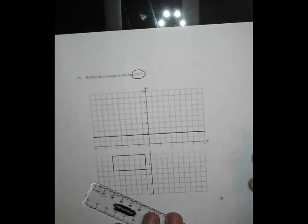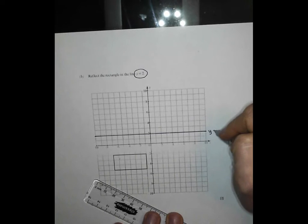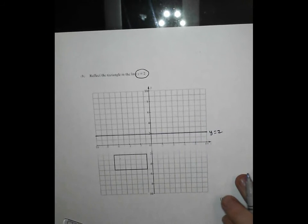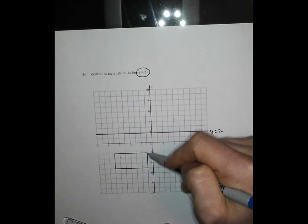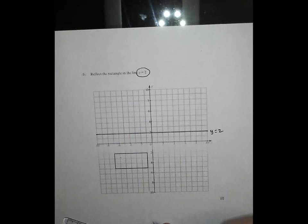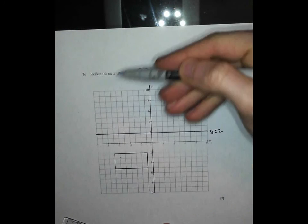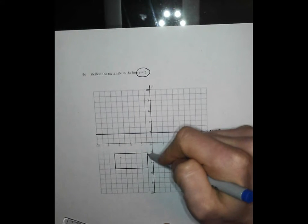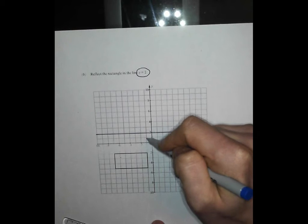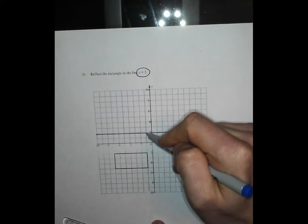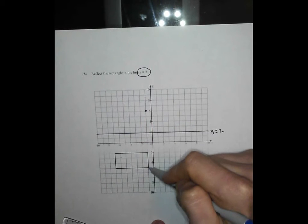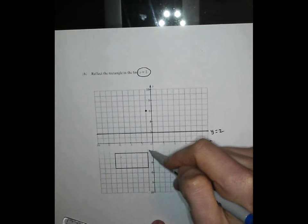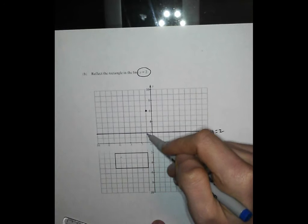And then the rest of it's pretty straightforward. To reflect in there, I tend to count how far each point is away from the line and then make sure it's the same distance from the line on the other side. So if we take this point, we go one, two, three, four away from the line. So let's keep going another four. One, two, three, four. Make a little dot there. This point here, one, two, three, four, five, six, seven away. So let's make sure we get seven away this side. One, two, three, four, five, six, seven. And you'll start to see a picture of the shape build up.